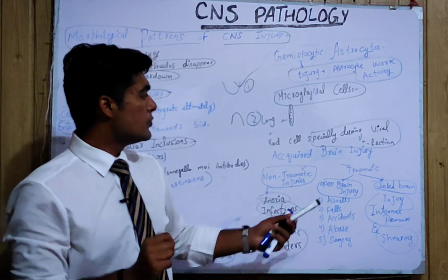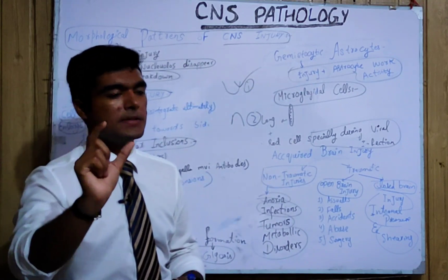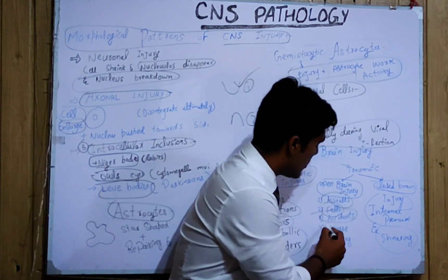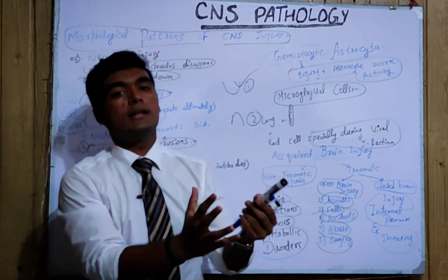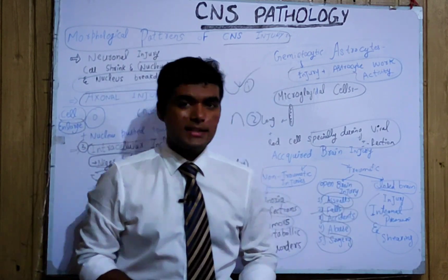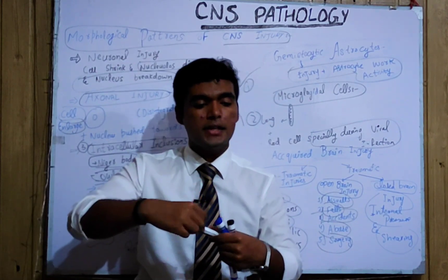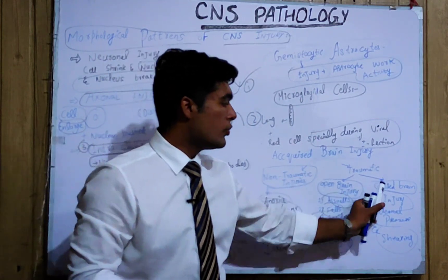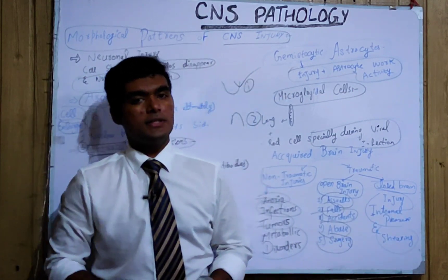Traumatic injuries are further divided into two types: open brain injury and closed brain injury. Open brain injury may be due to accident, fall, assault, abuse, or surgery. Closed brain injury — for example, an intraarterial burst causing bleeding in the brain — is the second classification of traumatic injury. Shearing and intraarterial pressure are basically involved in closed brain injury.